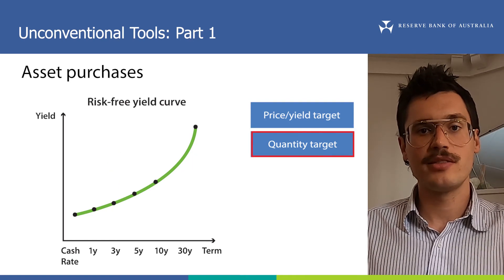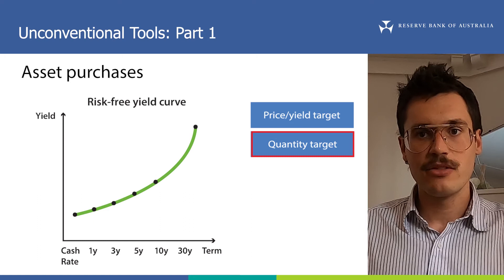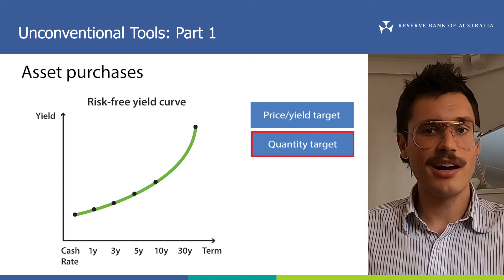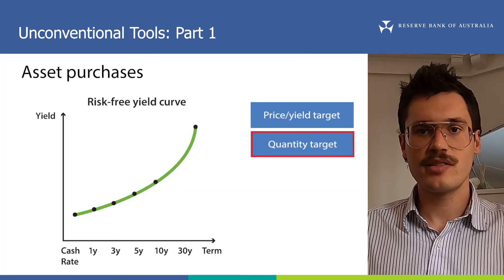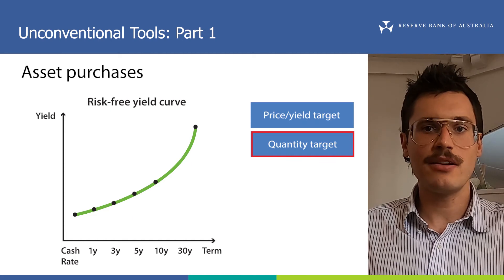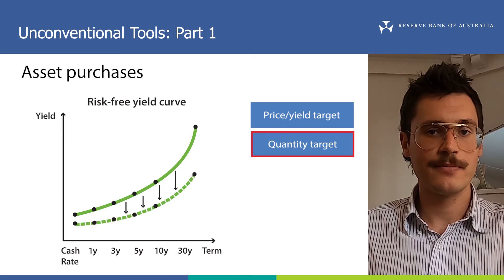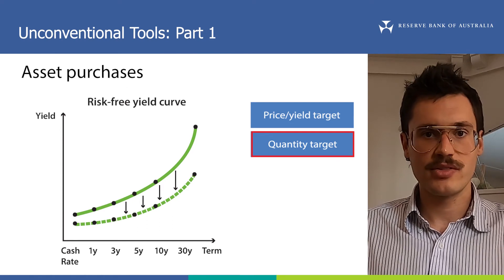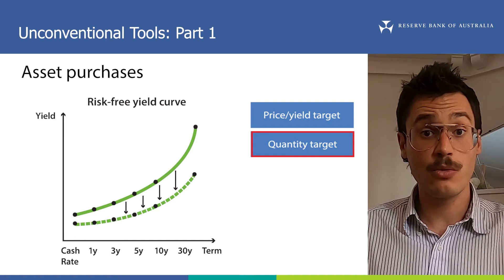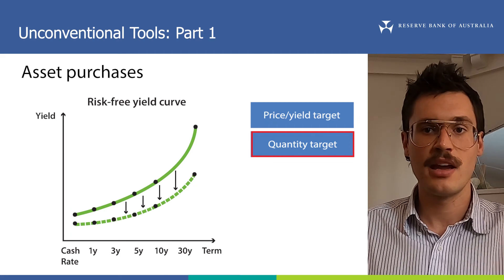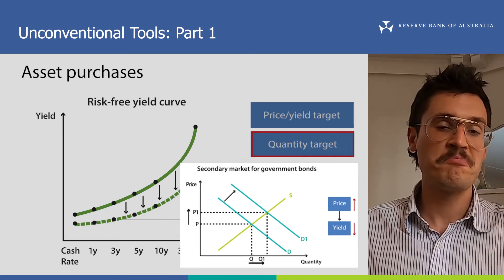Targeting a quantity of bond purchases is a little different. A quantity target involves making a commitment to purchase some bonds over a period of time. For example, the Reserve Bank Board committed to purchasing a large volume of bonds on the longer part of the yield curve, around the 5 to 10 year term. These purchases add to demand for all those bonds and lower their yields, changing the shape of the yield curve by lowering it and making it flatter. In addition, when banks sell government bonds to the RBA, they may use their ES balances to purchase other financial assets with a higher yield, which increases demand for those assets as well and may lower their yields too.